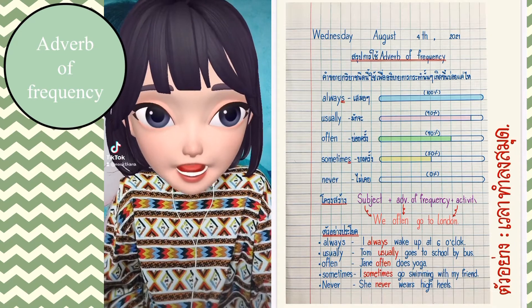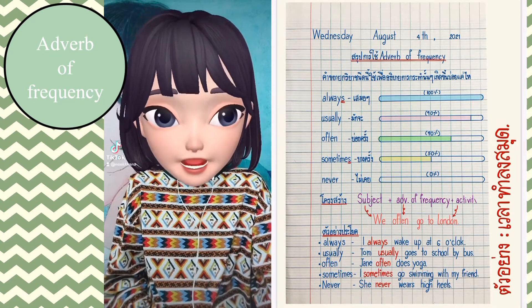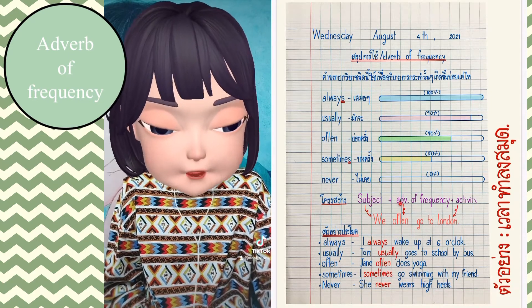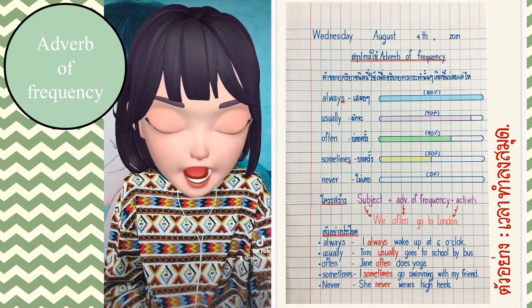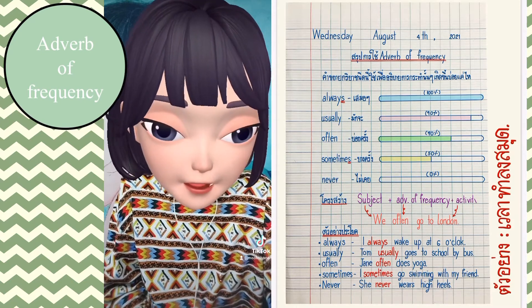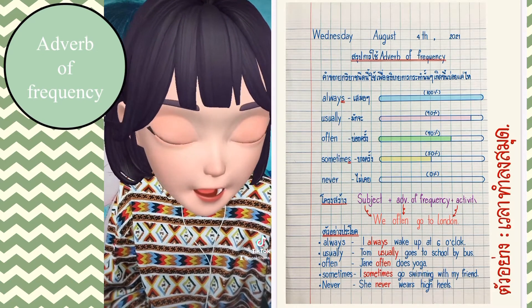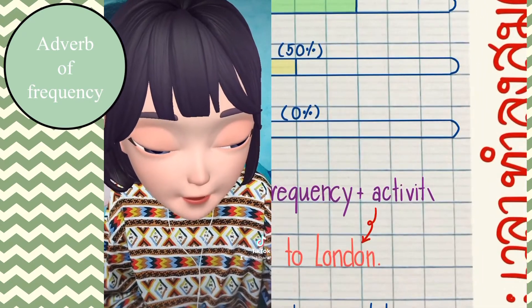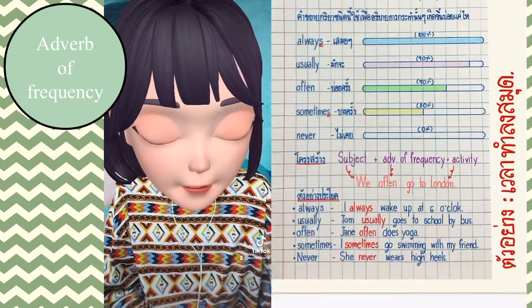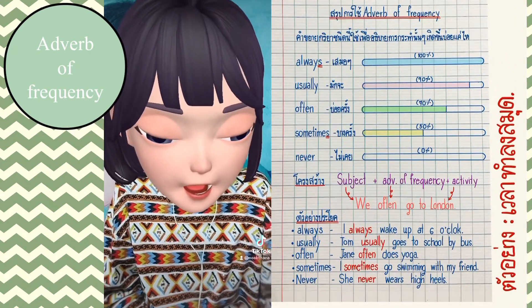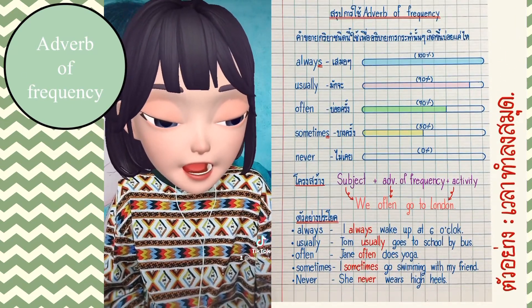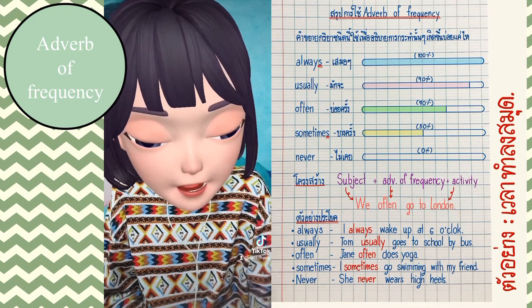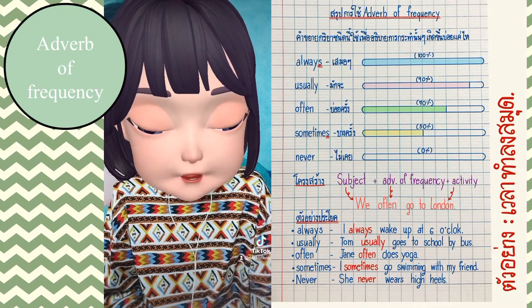In the adverb of frequency, the sentence structure will be like this: Subject + Adverb of Frequency + Activity. For example: 'We often go to London.'